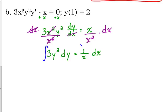When we integrate both sides, the antiderivative of 3y squared is just y cubed. The antiderivative of 1 over x is the natural log of the absolute value of x. Don't forget the plus c.